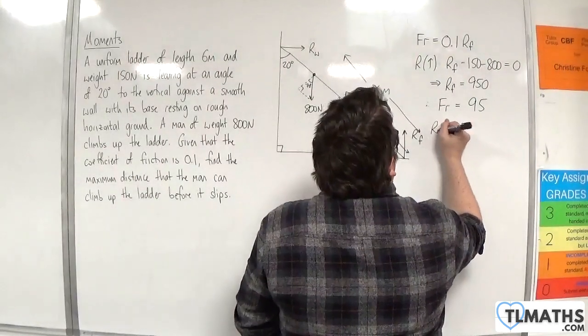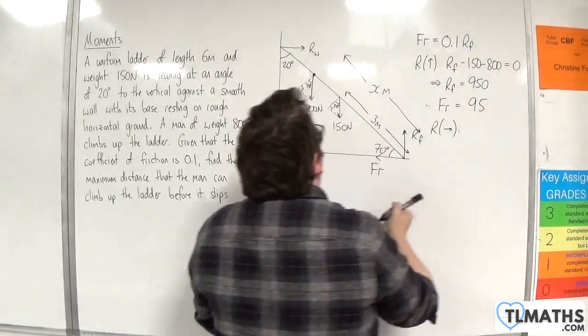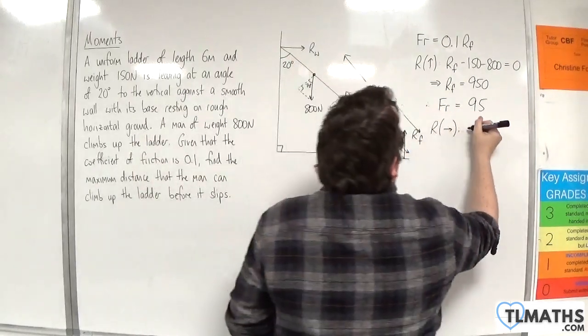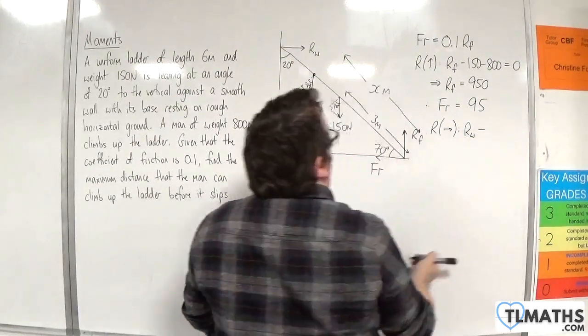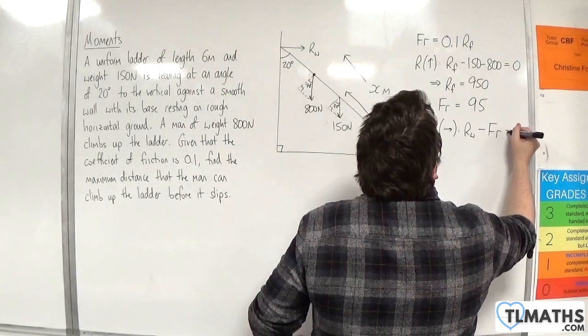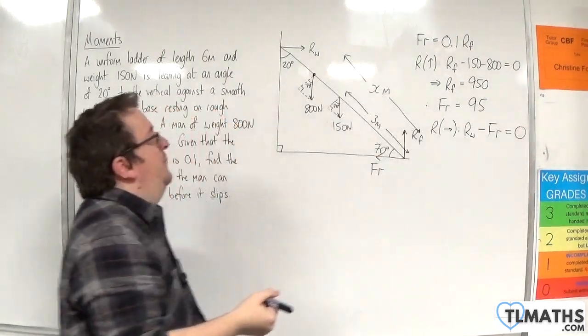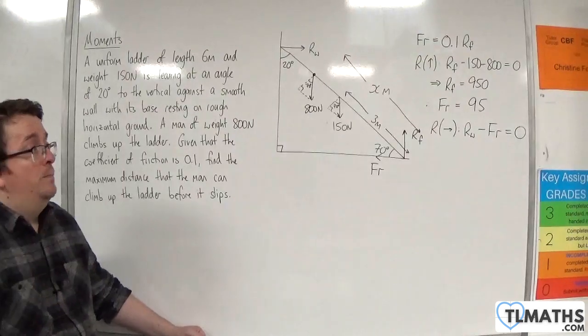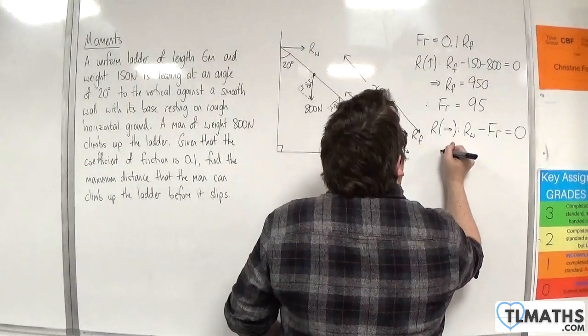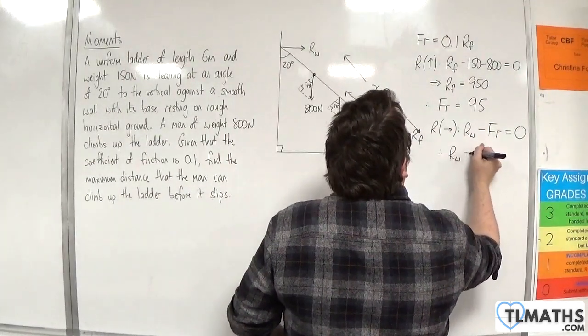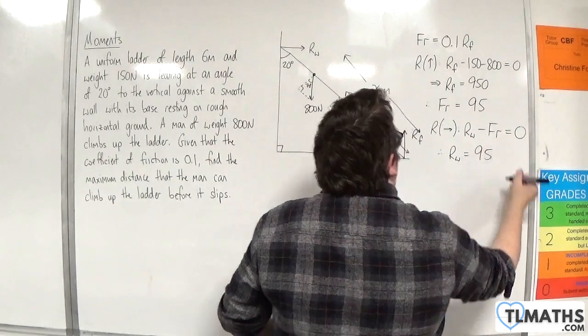If I resolve horizontally, taking to the right as positive, I've got Rw, the normal reaction with the wall, take away the friction. They're the only two horizontal forces, so that must be equal to zero. So therefore, the normal reaction with the wall must also be 95.